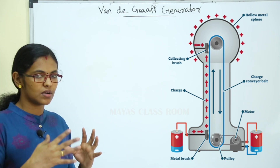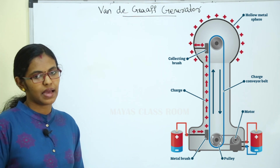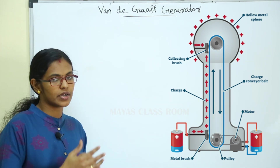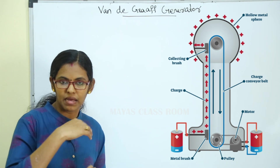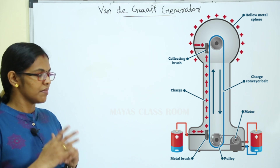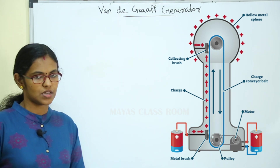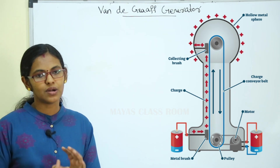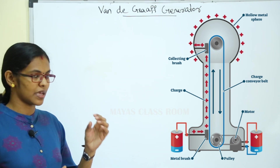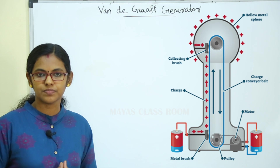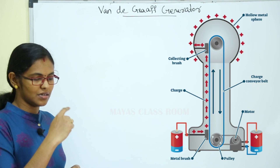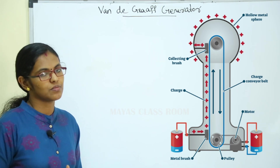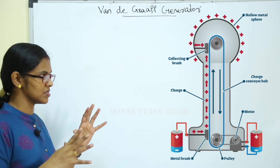There is a motor. There is a hollow sphere used in an insulating stand. There are two spray combs. There is a battery of 10 kV. There are two pulleys and a belt. There is a motor — these are the parts of the construction.